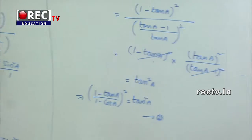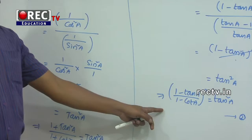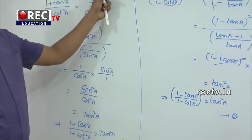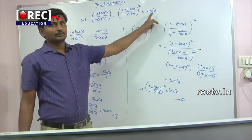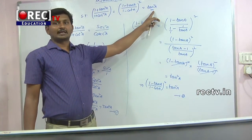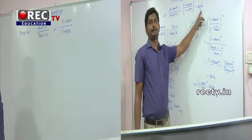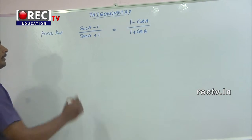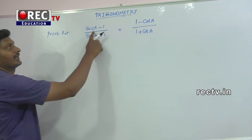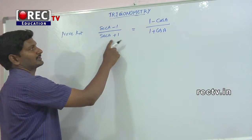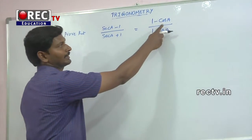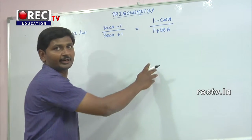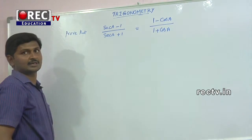From equations 1 and 2, we can say all three values are equal to tan²a. Next question: prove that (sec a - 1) / (sec a + 1) is equal to (1 - cos a) / (1 + cos a).